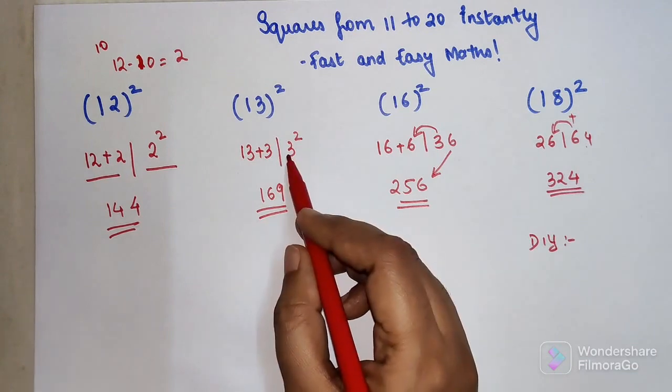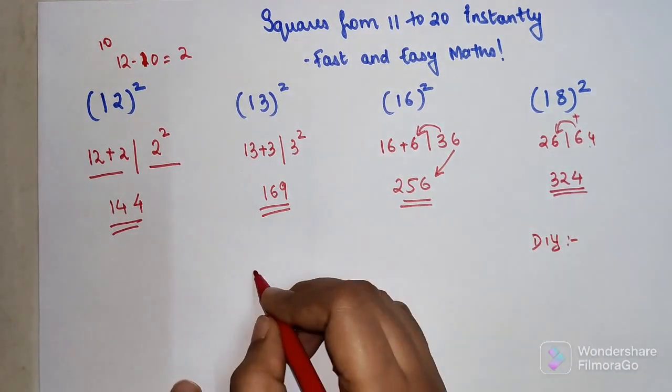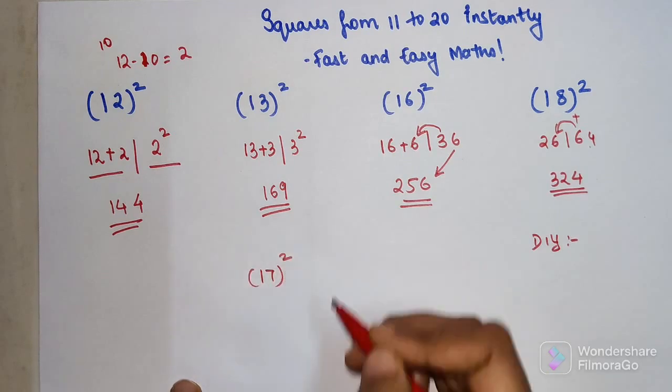Here since there was only just one single digit, we didn't have to add this. So very quickly let's do 17 squared if you want to find.